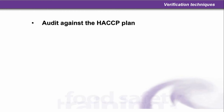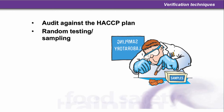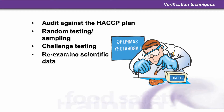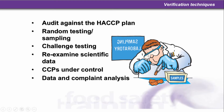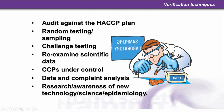Verification techniques: we need to audit against the HACCP plan, use random testing and sampling, challenge testing — which is almost like on-the-spot testing — re-examine scientific data, make sure CCPs are under control, perform data and complete analysis, and conduct research with awareness of new technology, science and epidemiology.